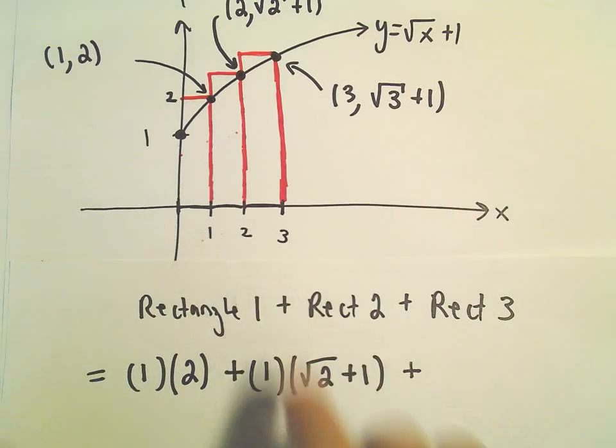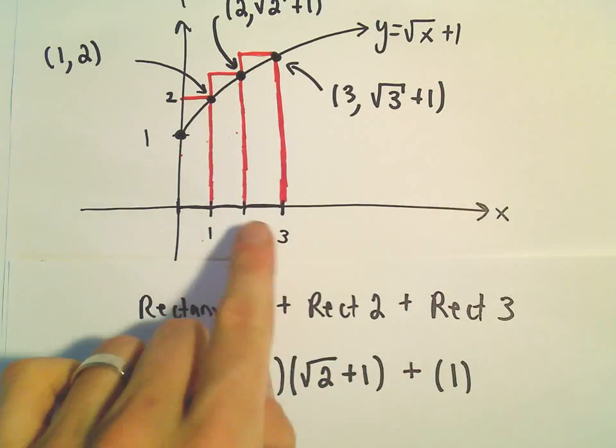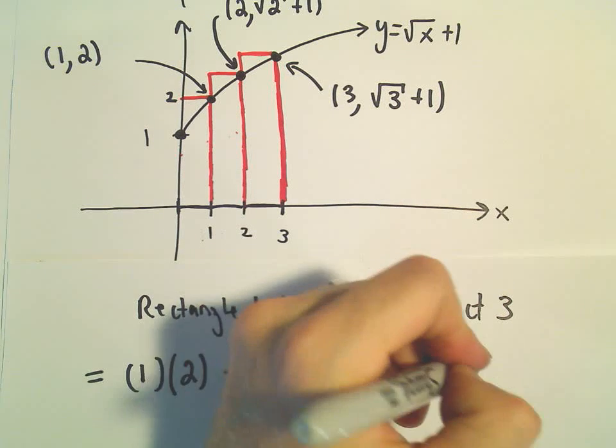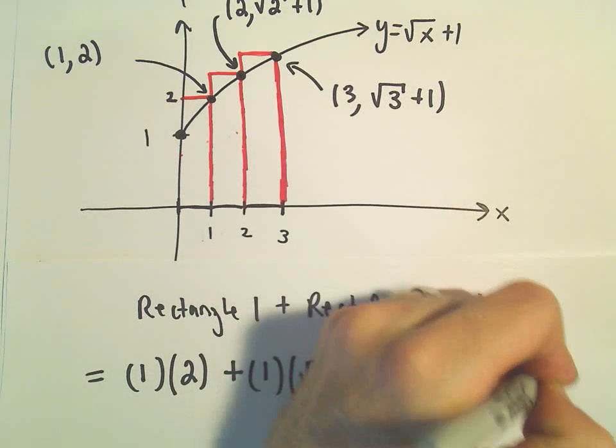Last but not least, our last rectangle also has a width of 1, and its y value, which is going to give the height, will be square root of 3 plus 1.